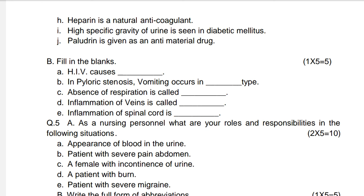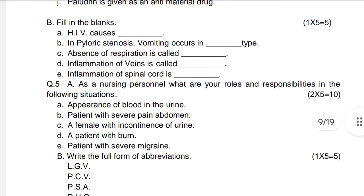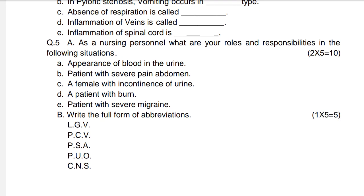Fill in the blanks — five marks: HIV causes dash. In aplastic anemia, hemolytic genesis occurs. Vomiting occurring dash type. Absence of respiration is called apnea. Inflammation of the spinal cord is called dash.